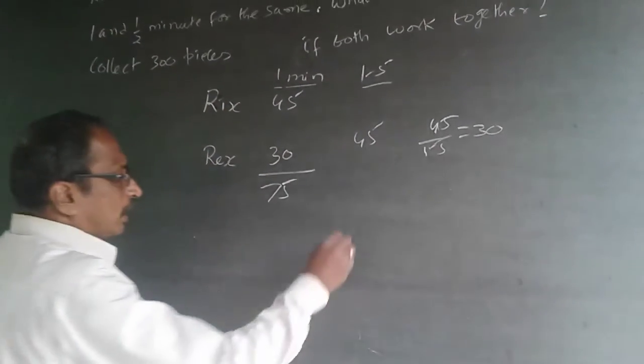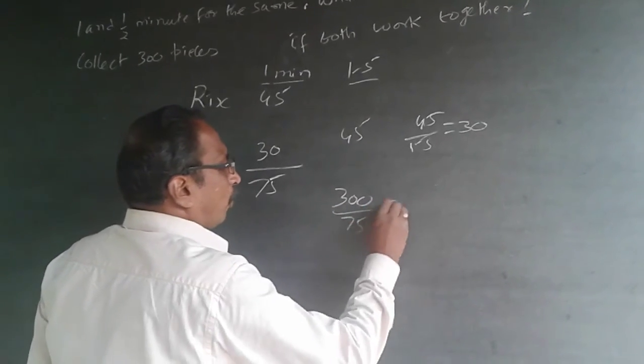So, the total is 300 pieces. 300 divided by 75 will be equal to 4 minutes.